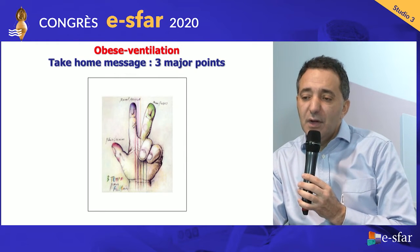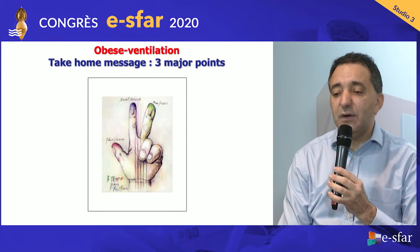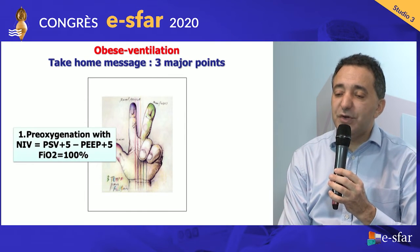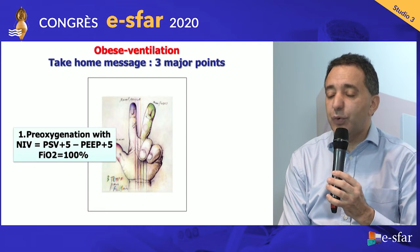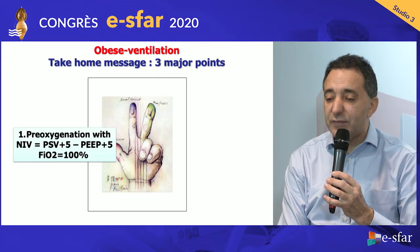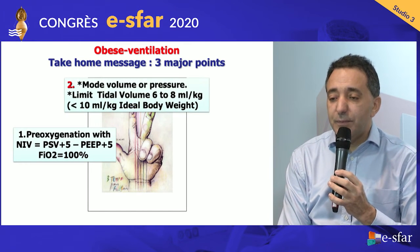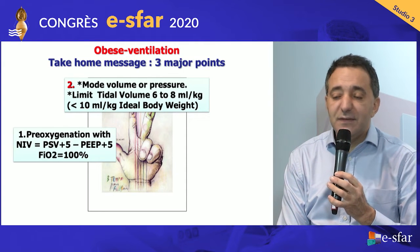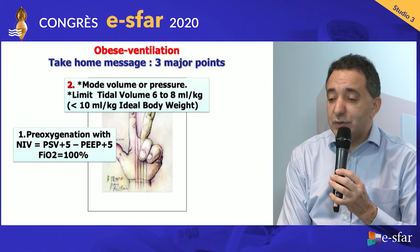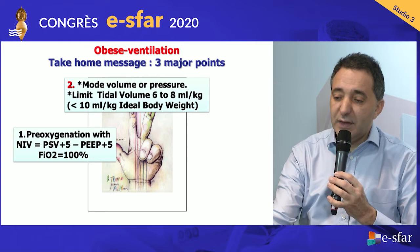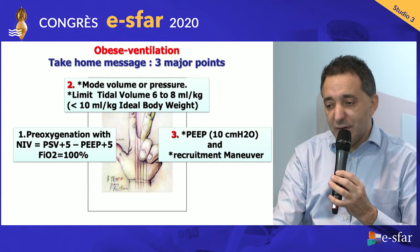In conclusion, the three take-home messages: First, for pre-oxygenation, use positive pressure as early as possible — either CPAP alone at 8 to 10 cmH₂O, or non-invasive ventilation with pressure support around 5 cmH₂O plus PEEP of 5 cmH₂O, using high-flow oxygen or FiO₂ 100%, to increase oxygen storage. Second, intraoperatively, use volume or pressure mode but limit tidal volume to less than 10 mL/kg, ideally 6 to 8 mL/kg, and add PEEP above 10 cmH₂O, combined with recruitment maneuvers, to achieve lung-protective ventilation.